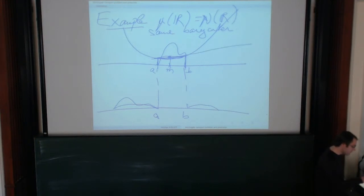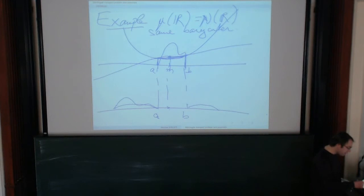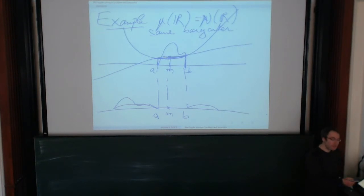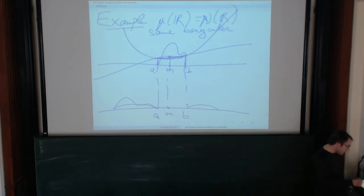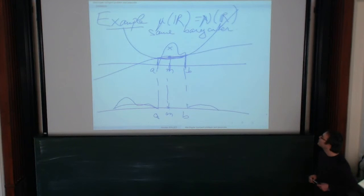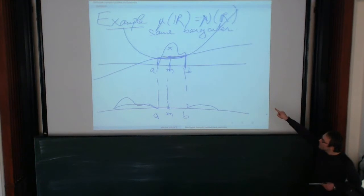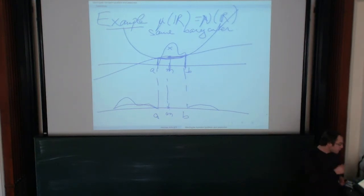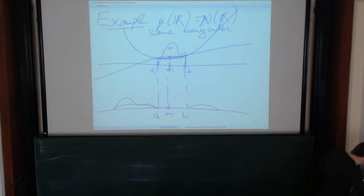Outside the interval [A, B], the convex function is bigger than the affine line, so the value obtained will be bigger. Integrating the convex function for the first measure gives a smaller result than for the second measure. You have the convex order, and there exists a Martingale transport plan. You can find it explicitly by hand.